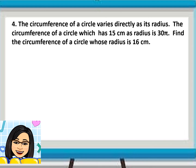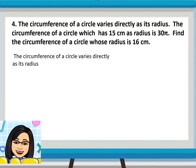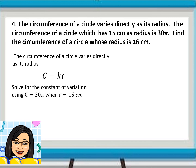Let us solve another problem: 'The circumference of a circle varies directly as its radius. The circumference of a circle which has 15 centimeters as radius is 30π. Find the circumference of a circle whose radius is 16 centimeters.' Let us translate the statement into symbols: C is equal to KR.